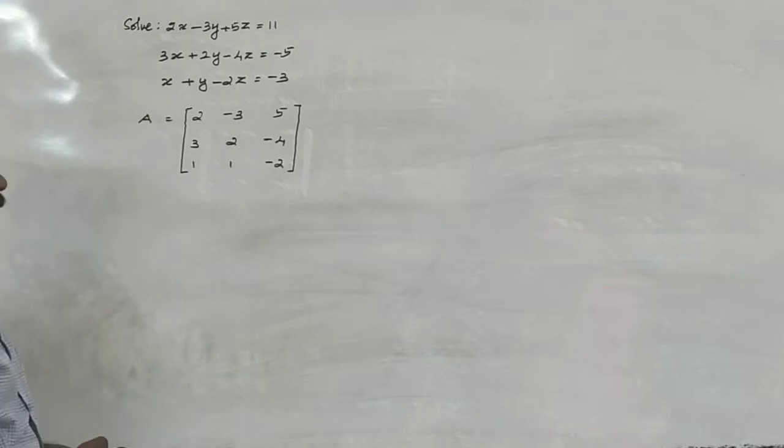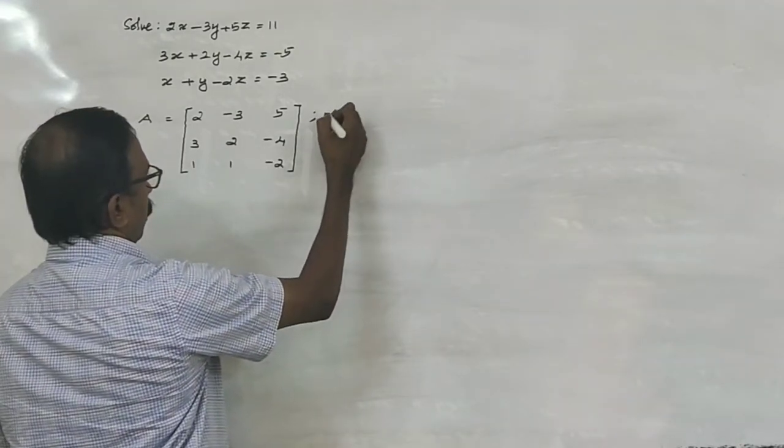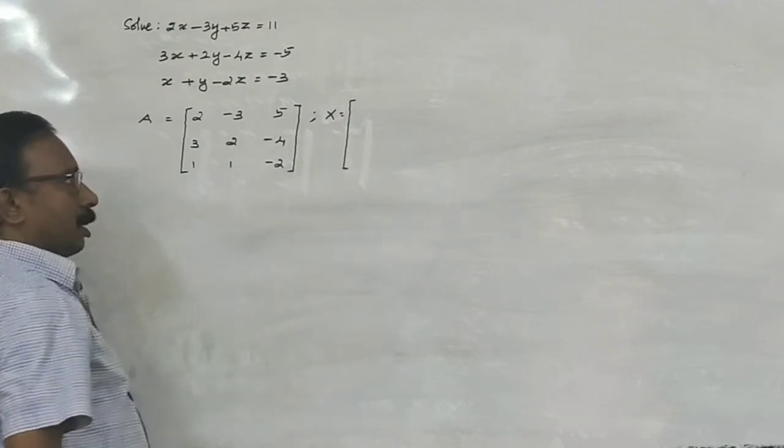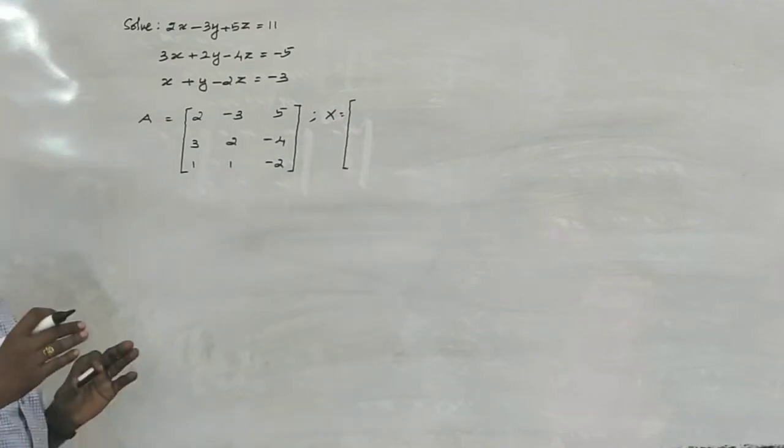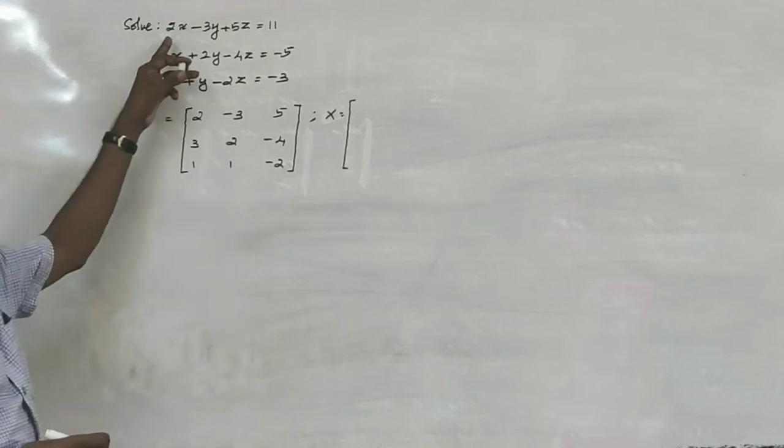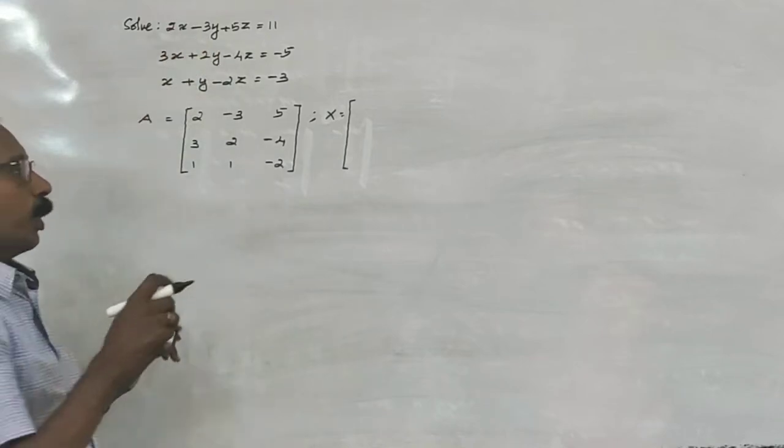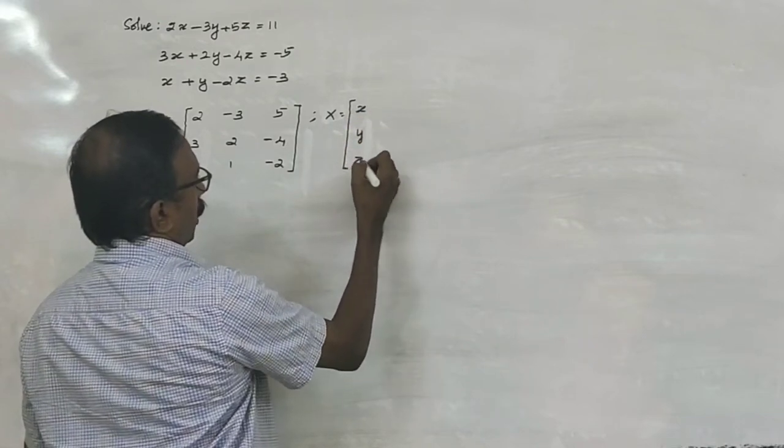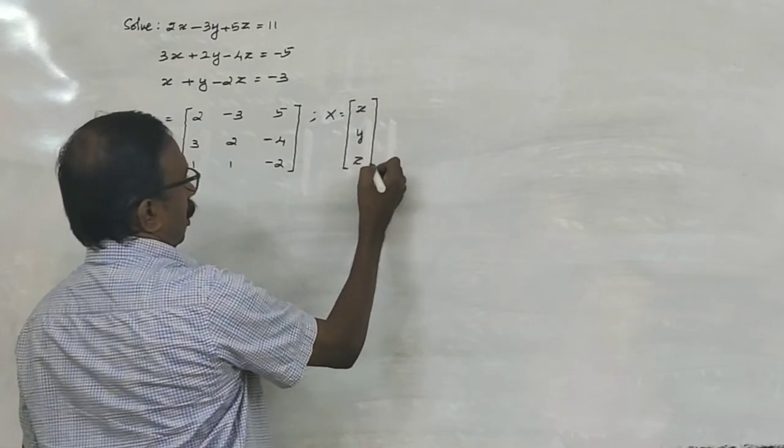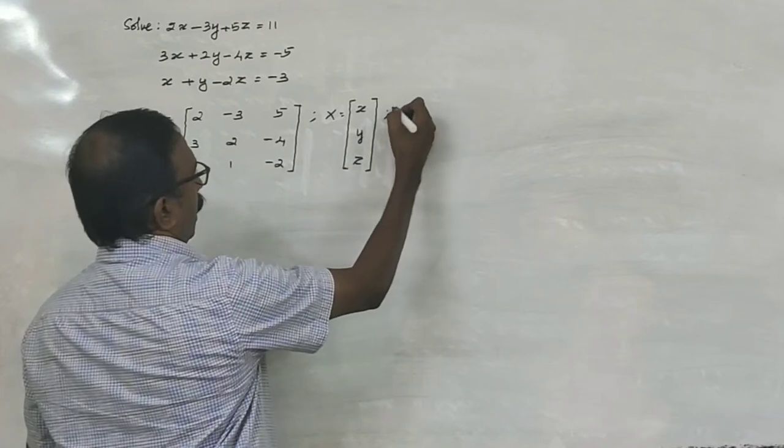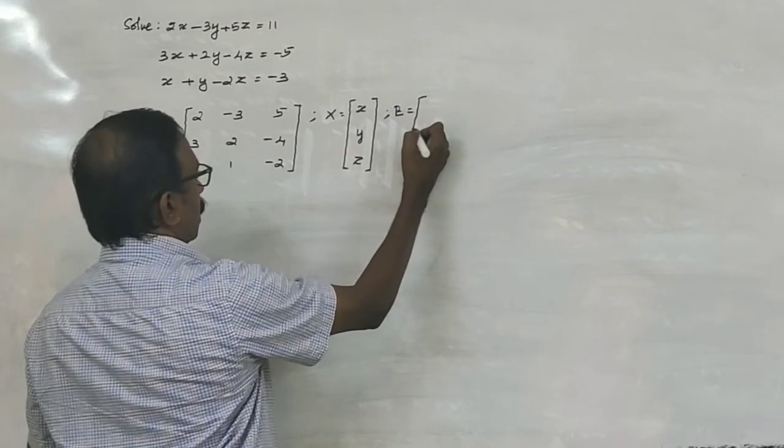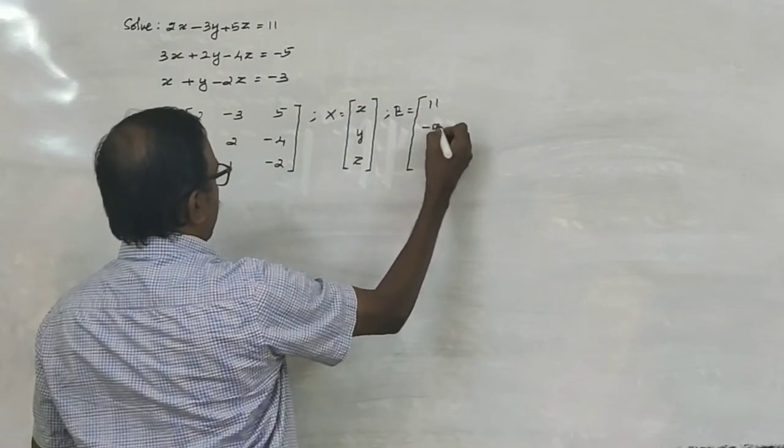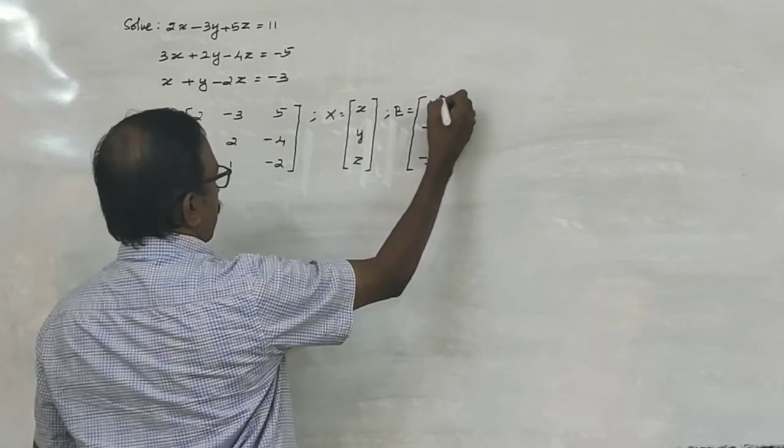X is equal to the matrix of variables. In this equation, we have 3 unknowns: x, y, and z. And B is equal to the constants of the system of equations. Here the constants are 11, minus 5, minus 3. These are constants.